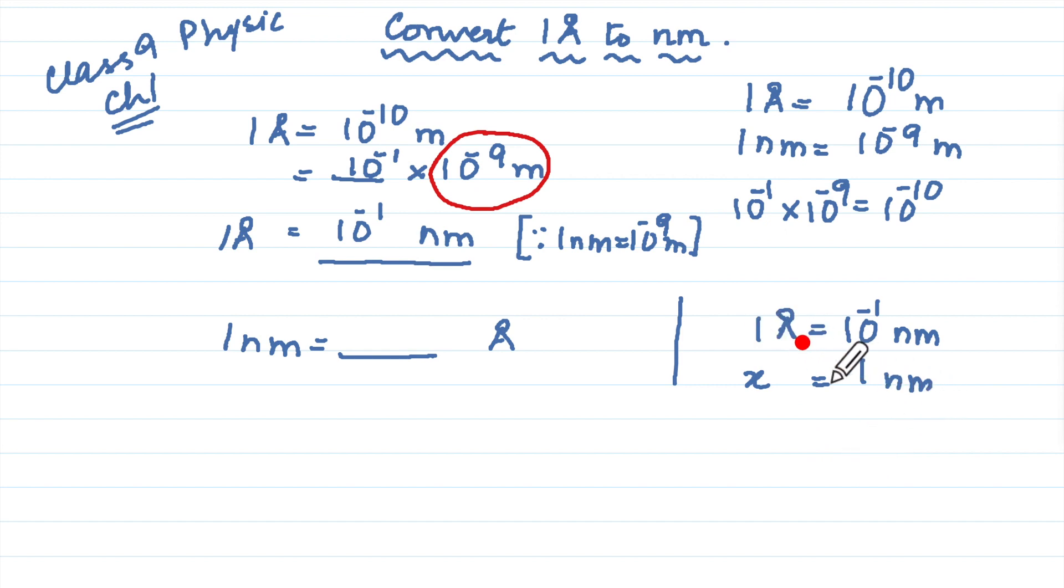Now if you cross multiply, you will get 1 into 1 into 1 divided by 10 to the power minus 1. How much is that?